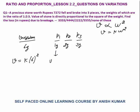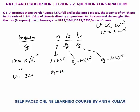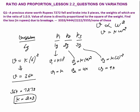The value of part 1, V1 = k × 1² = k. The value of part 2, V2 = k × 2² = 4k. The value of part 3, V3 = k × 3² = 9k. The unbroken stone's value is 36k. Since the unbroken stone was worth Rs.7272, we have 36k = 7272, which gives k = 202.